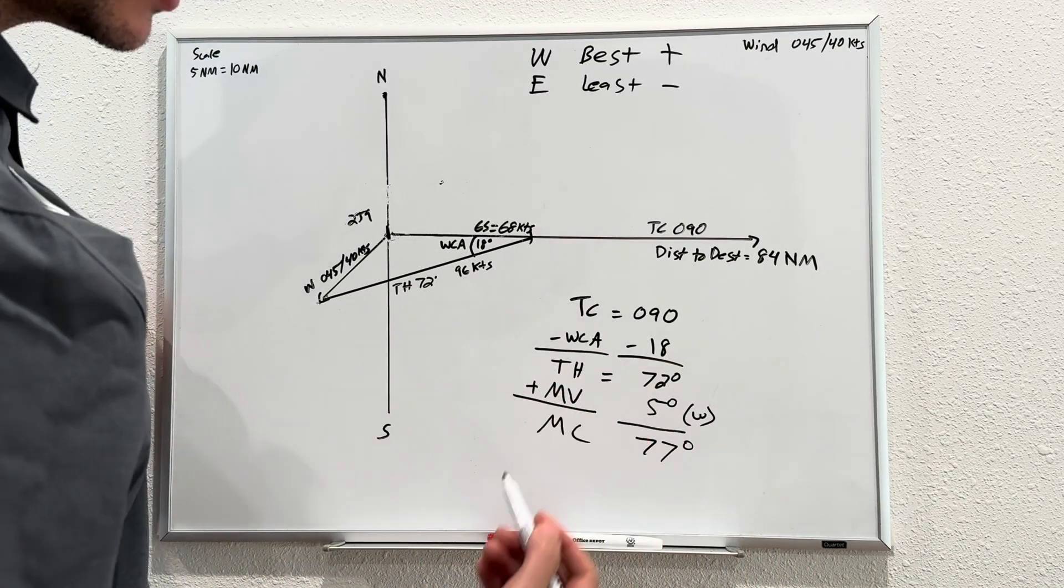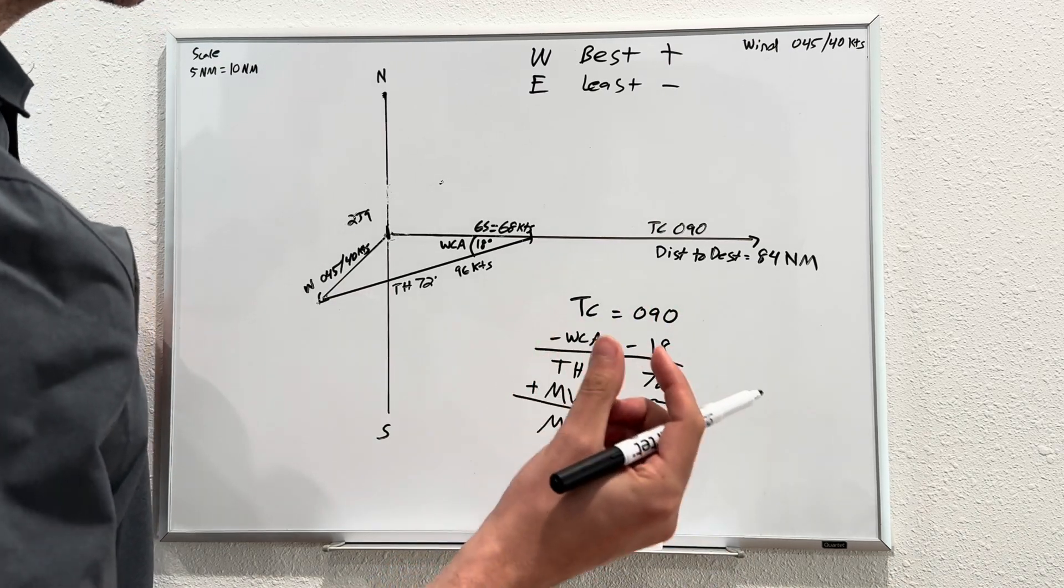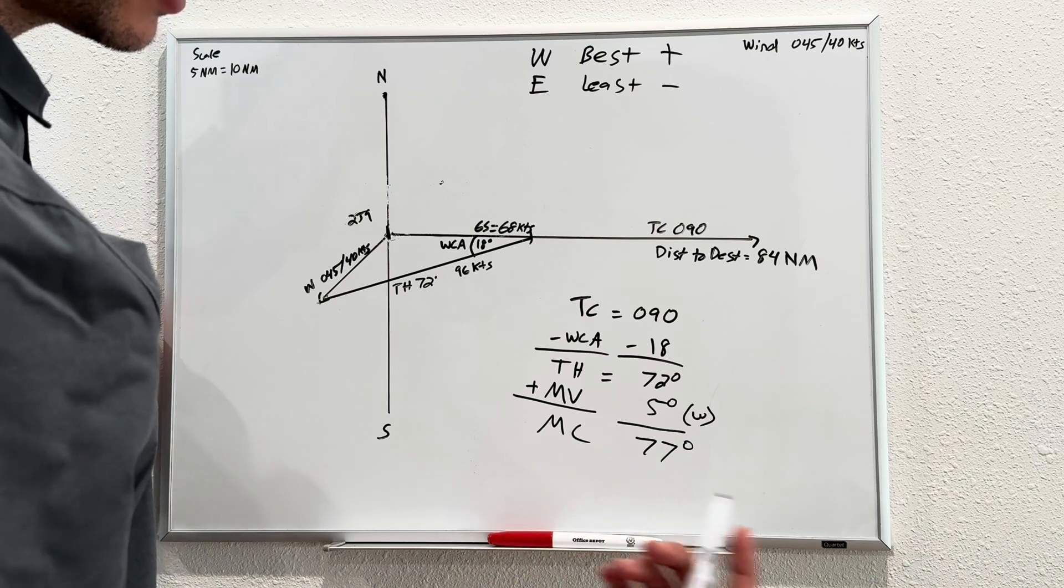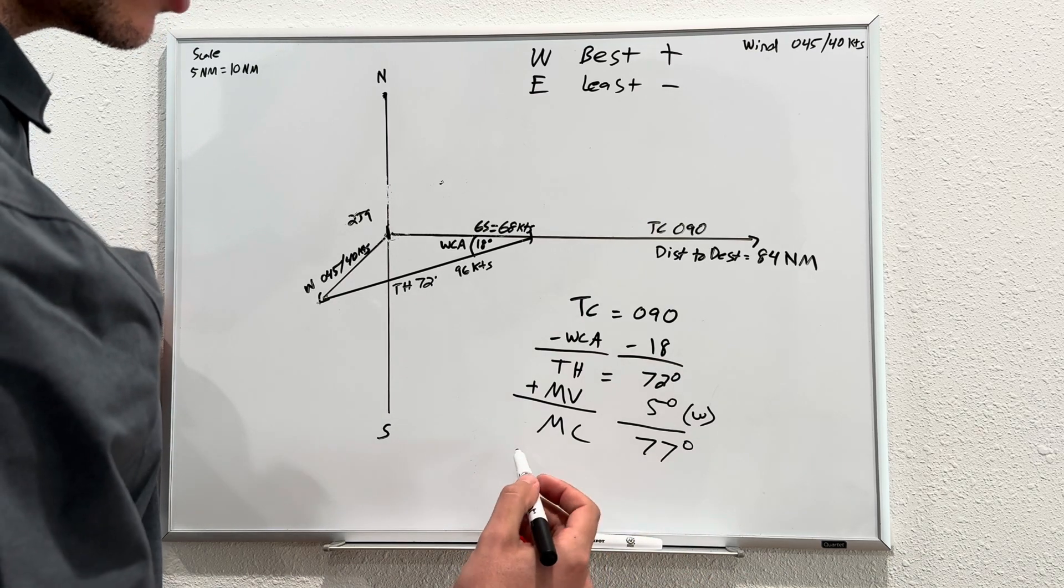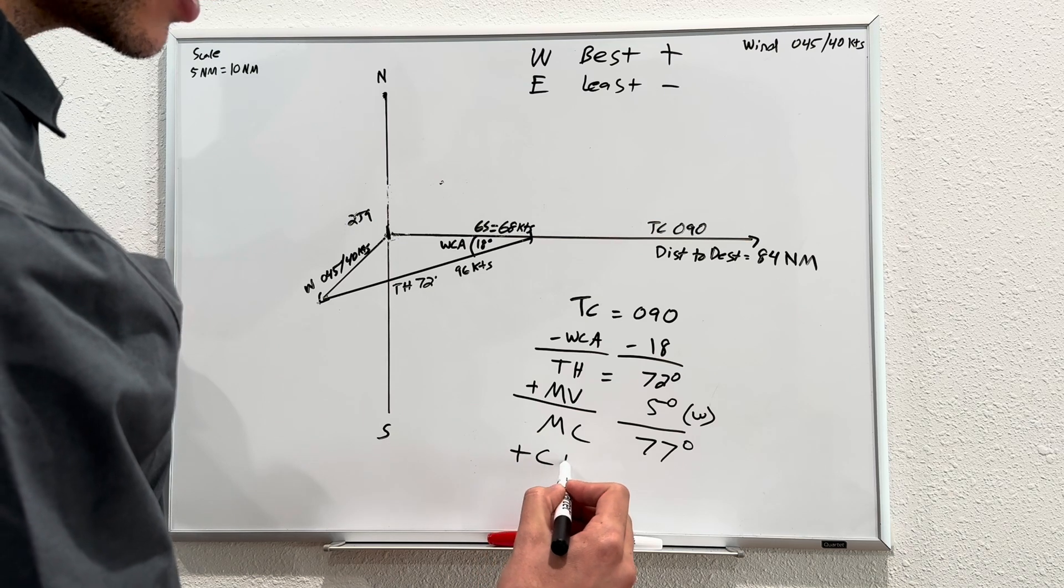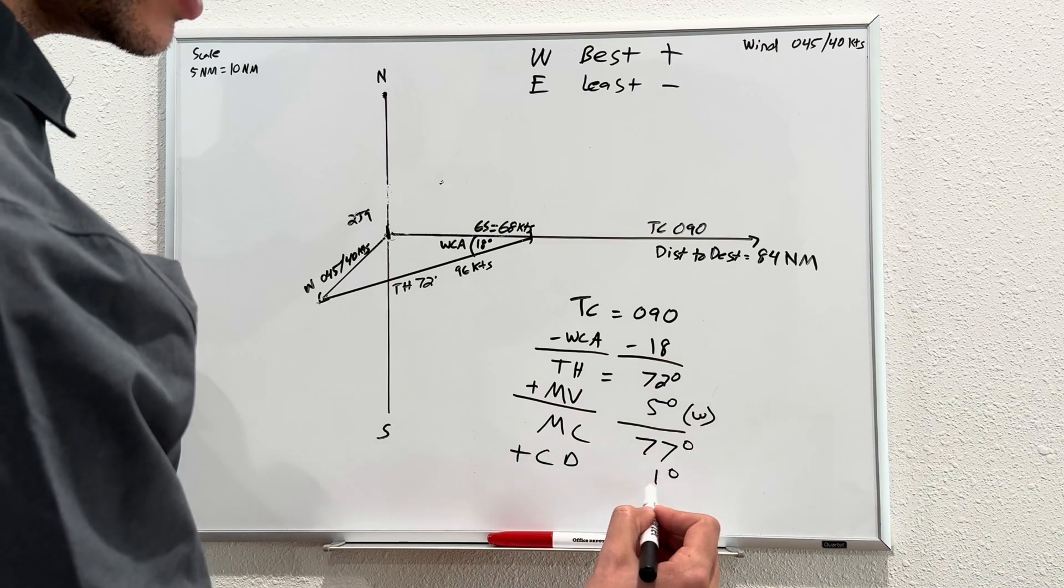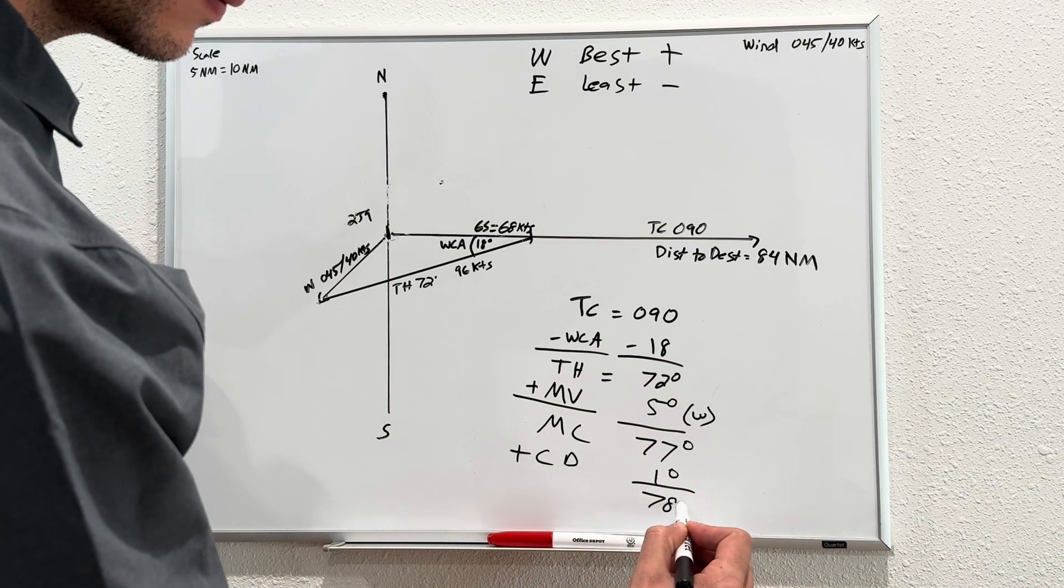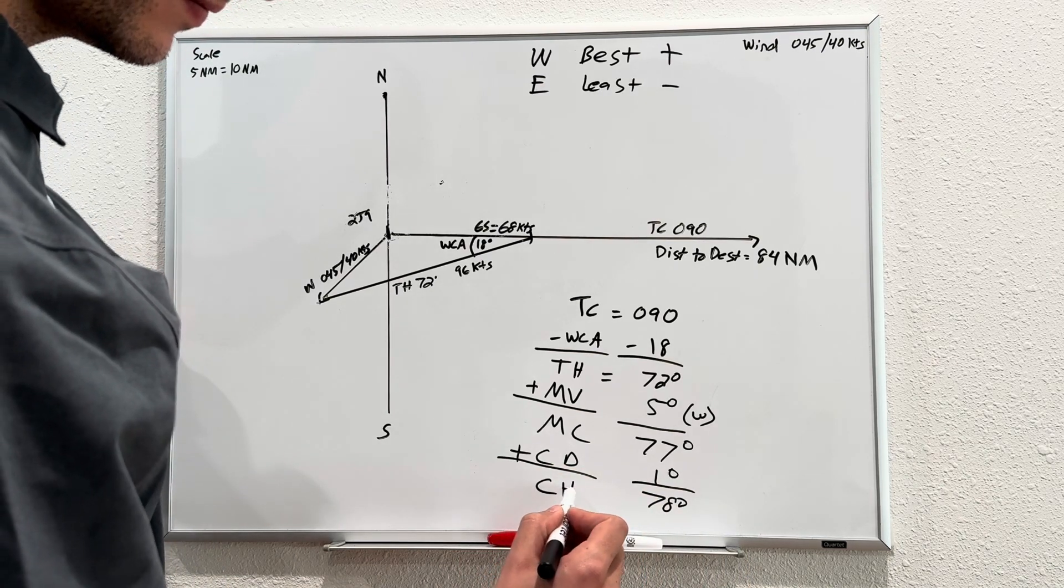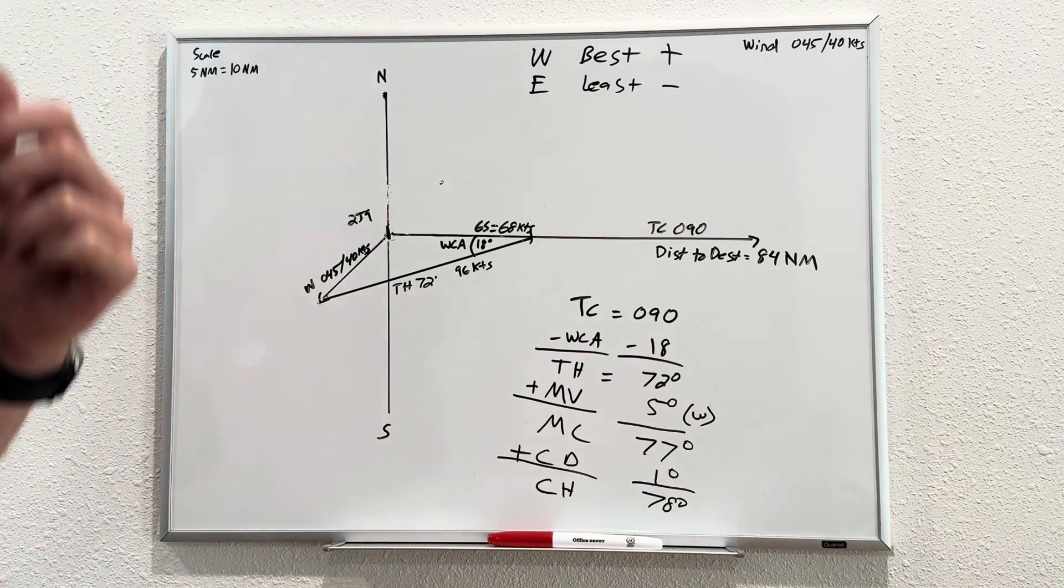Lastly, our compass deviation, that's in the airplane. It has a compass deviation card next to your wet compass. The compass deviation card in the 150 is 1 degree. So we add our compass deviation of 1 degree for 78, and that gives us our compass heading of 78 degrees.